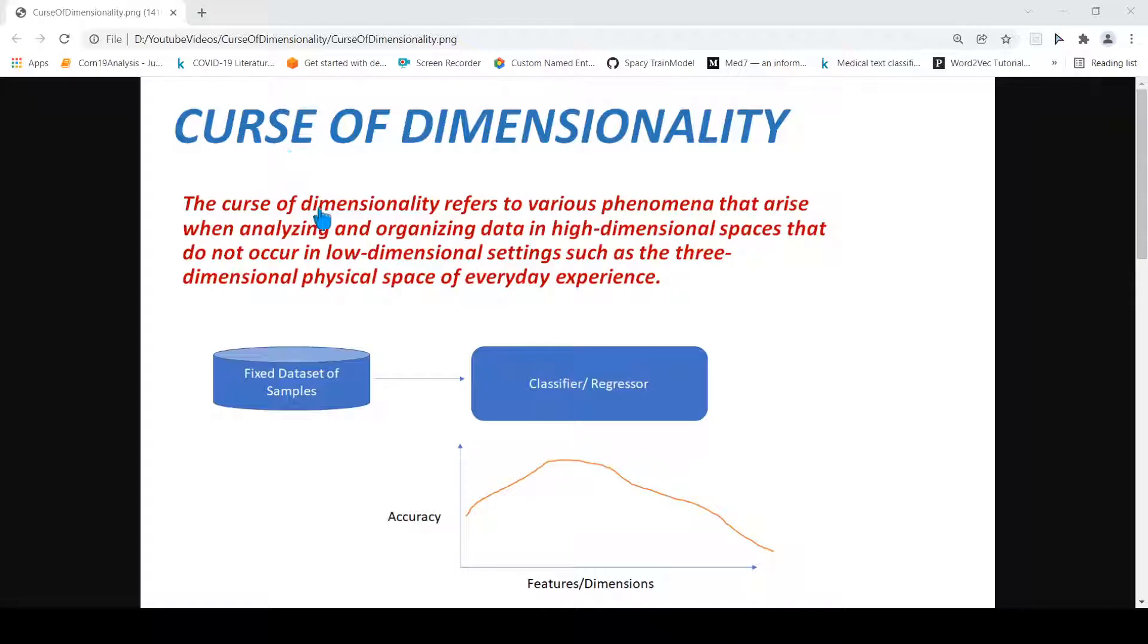The curse of dimensionality refers to various phenomena that arise when analyzing and organizing data in high dimensional spaces, and these phenomena do not occur in low dimensional settings such as the three-dimensional physical space of everyday experience. So what is this curse of dimensionality as per these statements, and when you relate it to machine learning how does it look like?